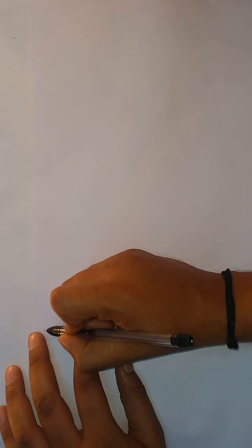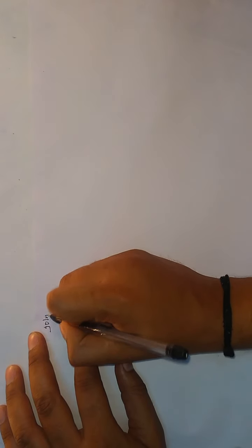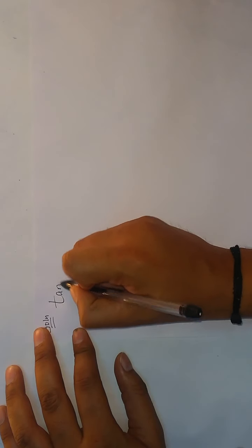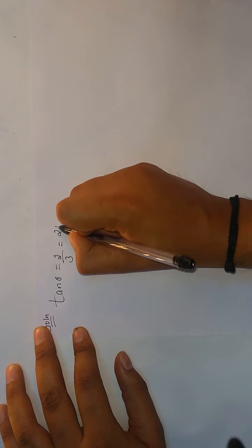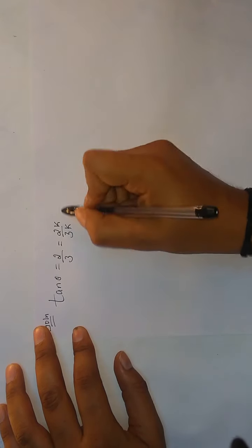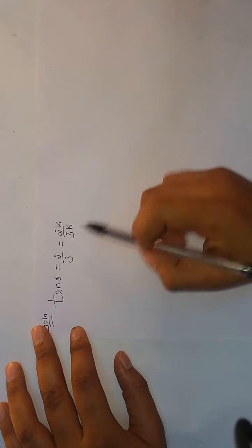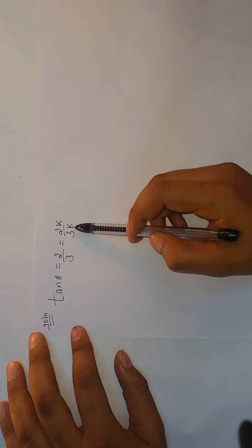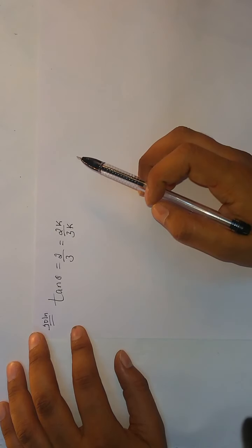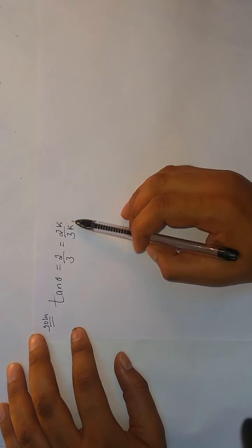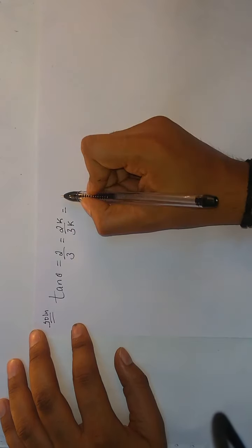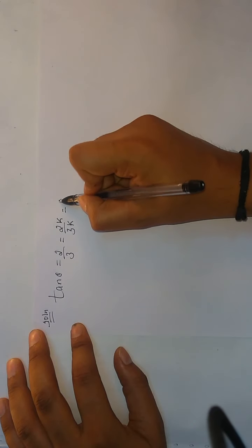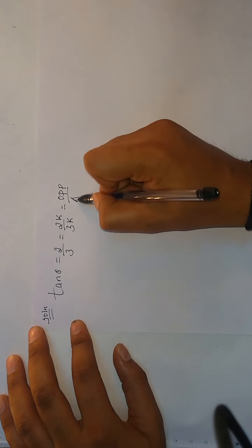So let us begin with this problem. First of all, we have given tan θ equal to 2 by 3. This can be written as 2k by 3k. Since we are dealing with ratios, k is a common factor. The ratio usually has a common factor in practice.